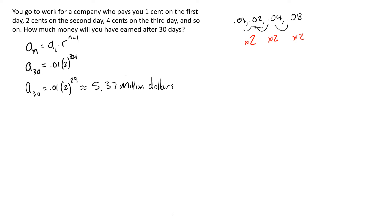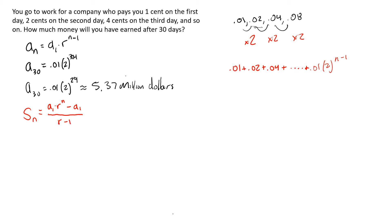The equation we need is for the sum of a geometric series. The series would be 0.01 plus 0.02 plus 0.04 plus dot dot dot. The sum of a geometric series is given by: take the first term, multiply it by r to the nth power, subtract the first term, and divide all that by r minus 1. This can also be written as a_1 times (r^n minus 1) divided by (r minus 1) — different books present it in different ways, but they're all the same.